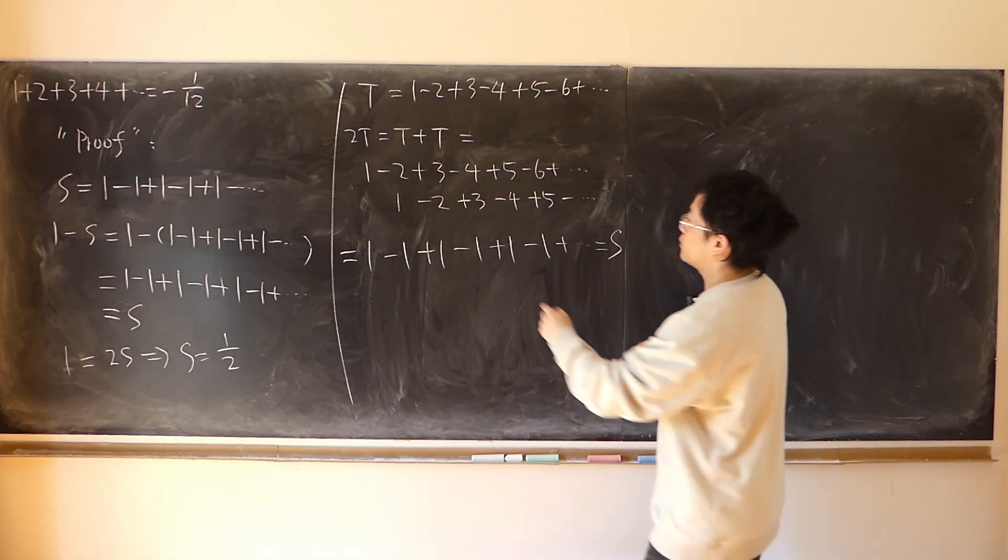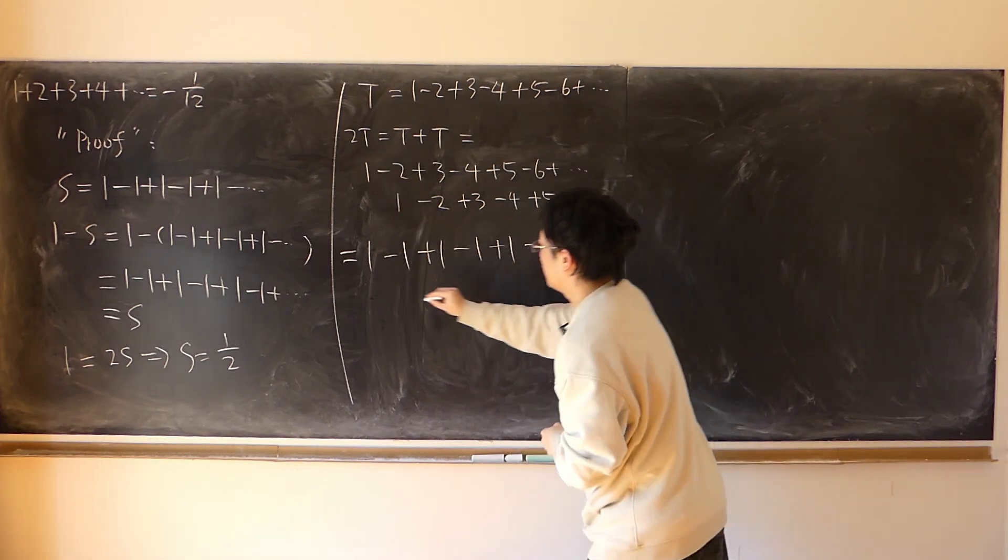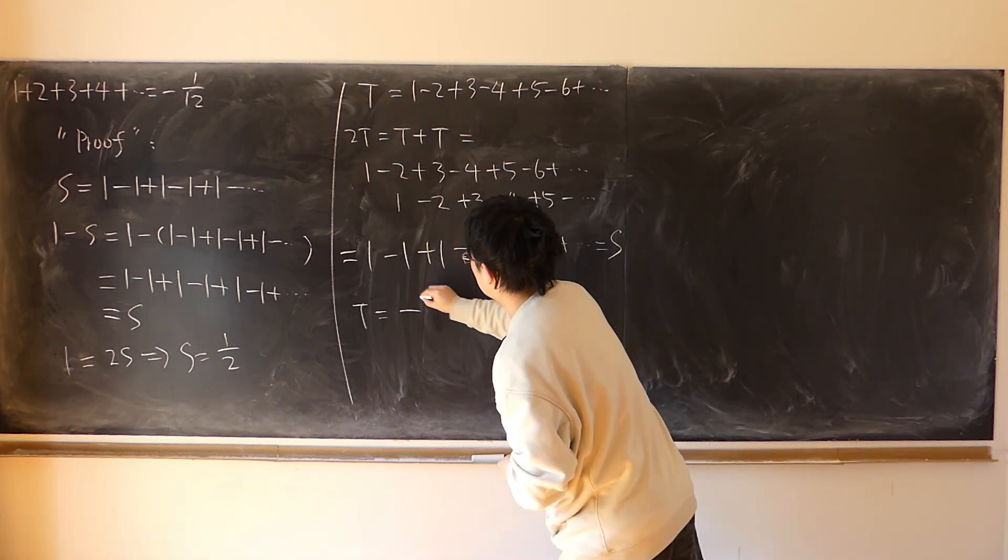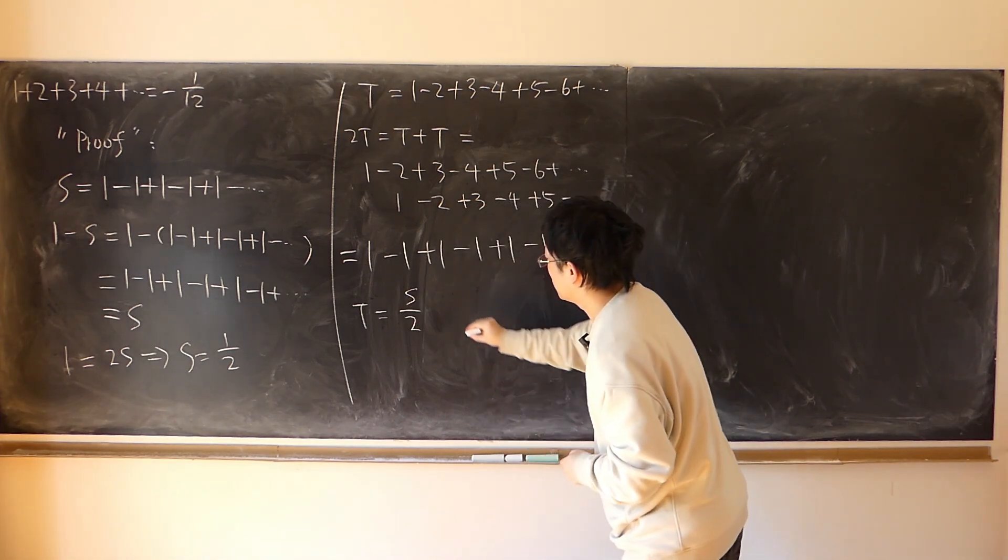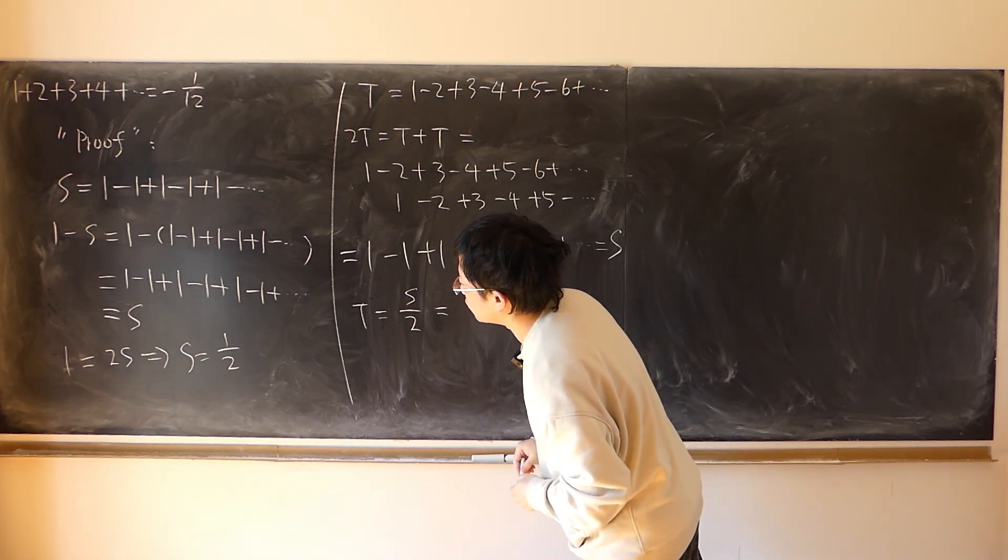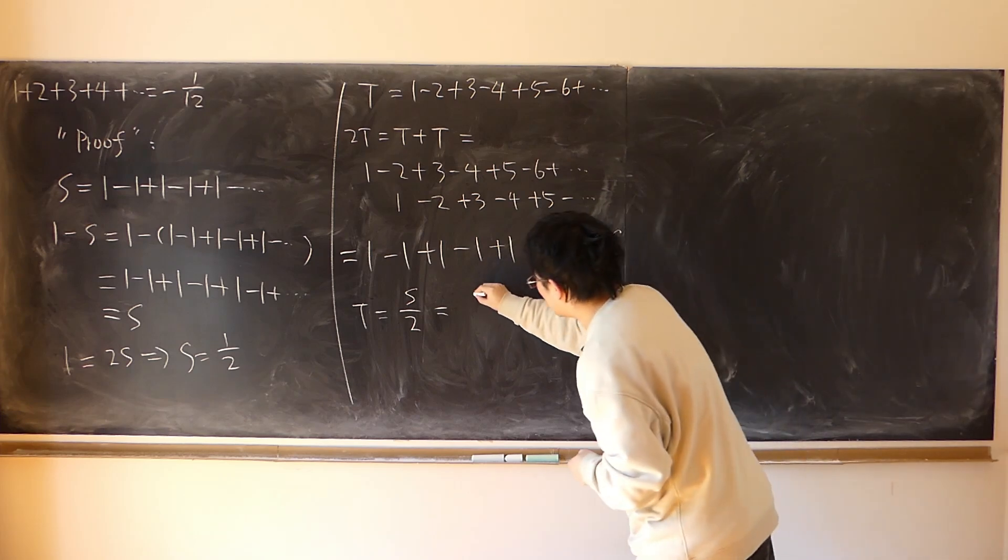So like I said, 2t is equal to s. So t is equal to half of s. And s is known to be half. So t is equal to a quarter.